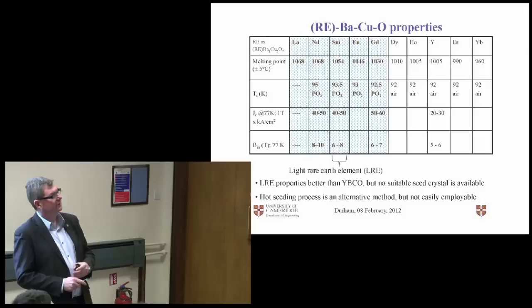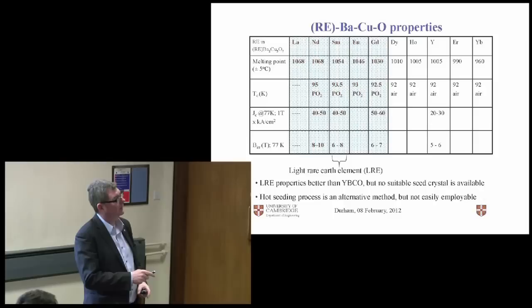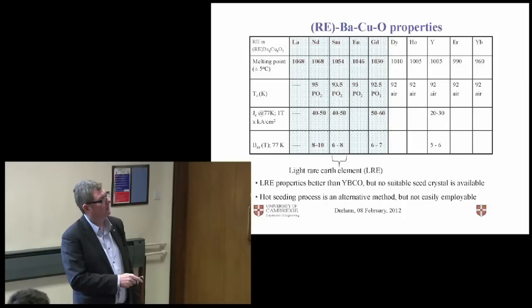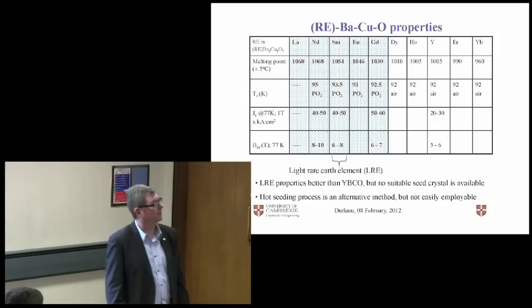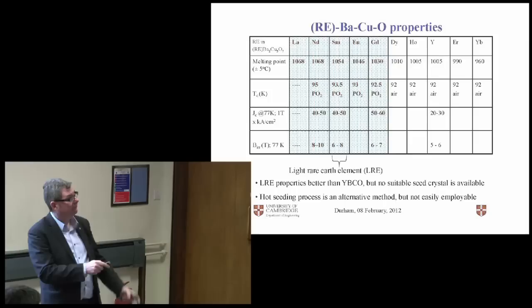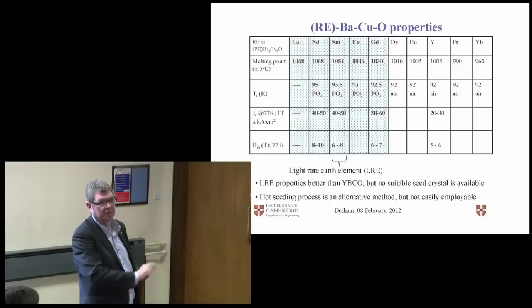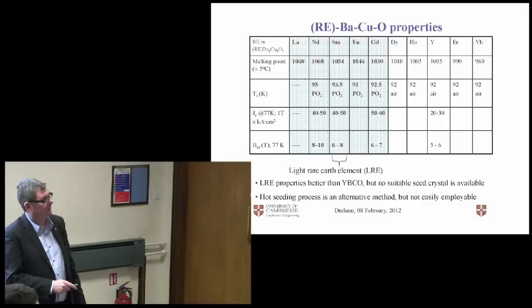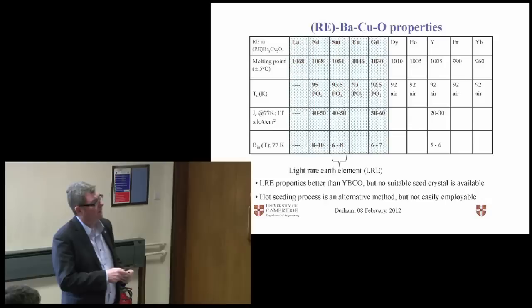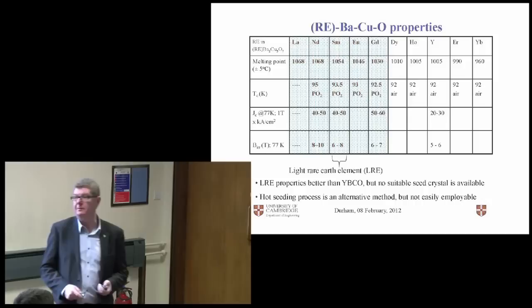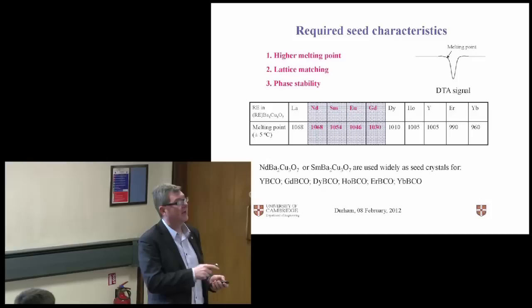If you look at the different rare earth barium copper oxide materials available, the ones that are shaded light blue are the light rare earth elements, and they tend to give you better properties. So they give you higher transition temperatures, and they give you higher JC's, and higher irreversibility fields. However, one problem with these light rare earth barium copper oxides is that you have to process in reduced oxygen atmosphere. Because if you don't do that, you get the substitution of the rare earth element on the barium site, and TC comes down.